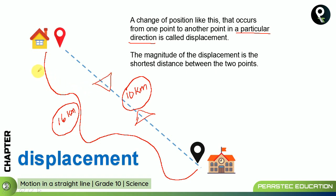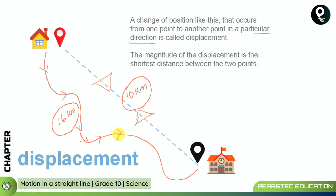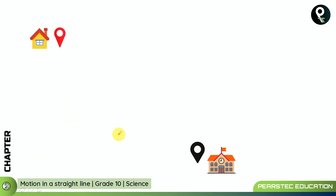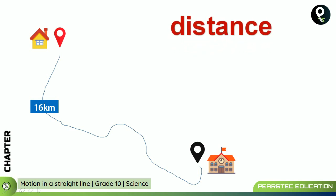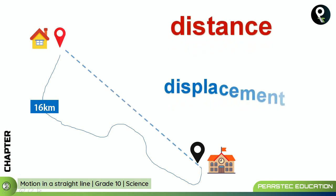For example, if you travel a road that is 16 kilometers but the straight-line shortest path is 10 kilometers, then 10 kilometers is the magnitude of displacement and 16 kilometers is the distance. Displacement has a definite direction, but distance does not — because along the route you may go in many different directions, so there is no single direction for distance.